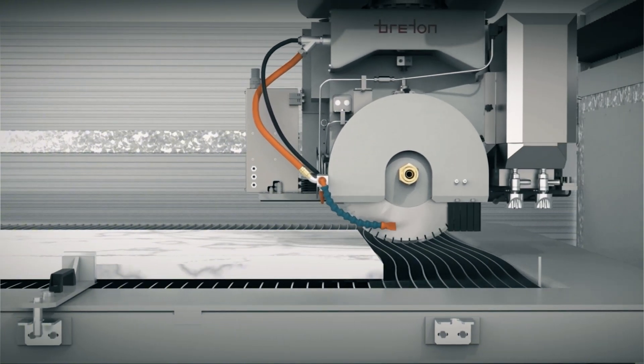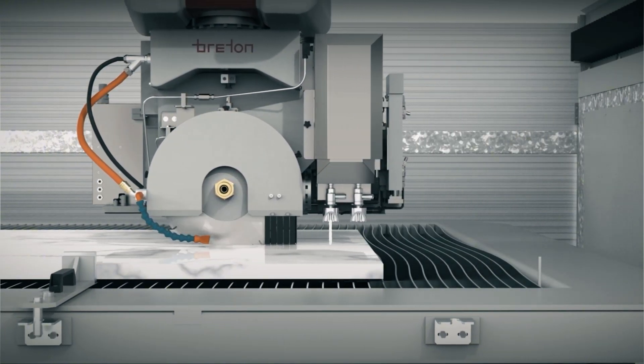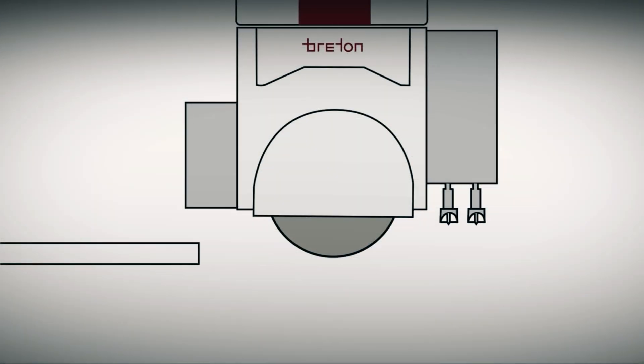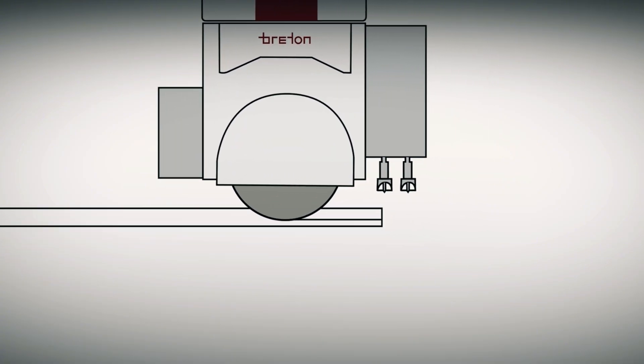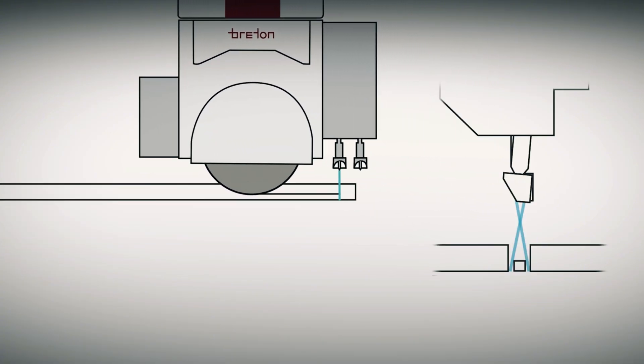In the Trinity system, the disc does not cut through the material entirely, leaving a thin layer at the bottom. This layer helps to stabilize the internal tensions, which are often the primary cause of breakage, particularly at the corners and during the final stage of the blade's exit.